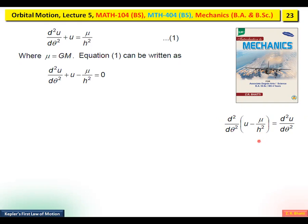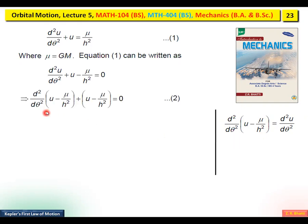This equation now becomes Equation 2: d²/dθ² · (u − μ/h²) + (u − μ/h²) = 0. We have replaced d²u/dθ² with d²/dθ² · (u − μ/h²).